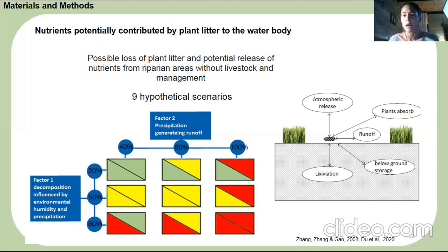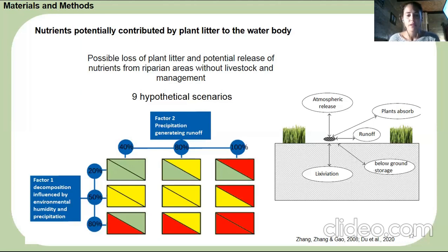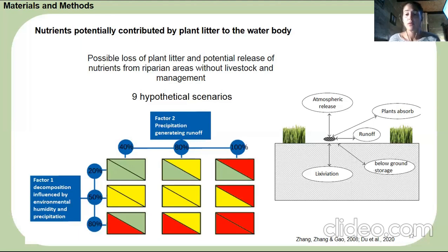For factor one, arbitrary decomposition values were generated regarding the most influential climate variables, like precipitation and humidity. A study including similar variables found 50% decomposition of grasses and herbs in one year. I took this value as intermediate and also assigned arbitrary scenarios with decomposition of 20% more and less, which could occur under conditions of higher or lower humidity and precipitation.